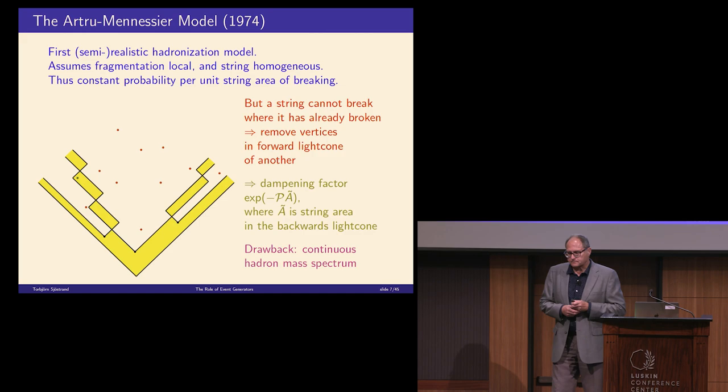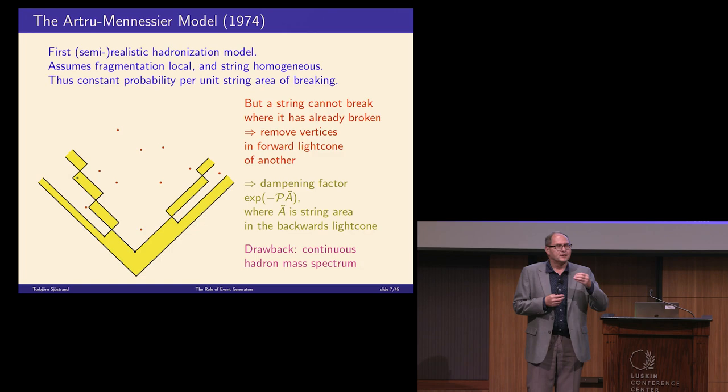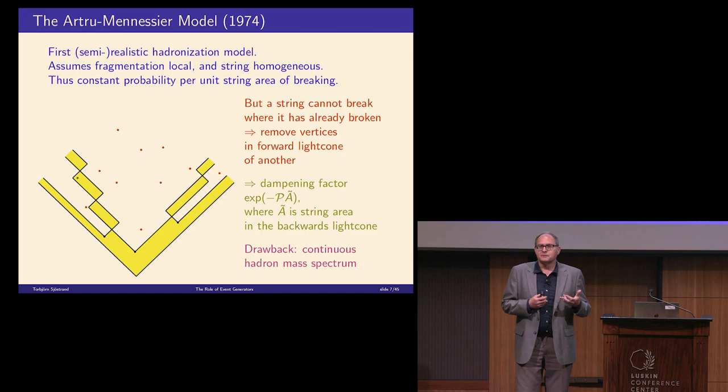In this particular case, there are only four hadrons produced by three separate breaks. It's easy to see that you have an exponential dampening factor for particles being produced at some given invariant time squared. You find that on average, you have some kind of hyperbola of constant invariant time where most particles are being produced. The drawback is that it gives you a continuous mass spectrum, not discrete hadrons. Also, these people were not good at communicating, and the model was not known to many.